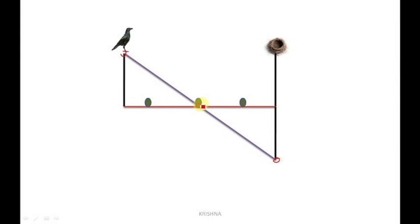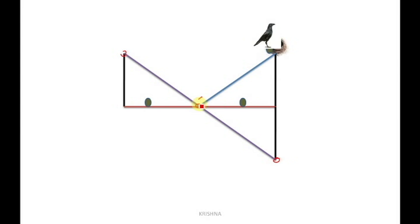That food grain should be chosen by the crow, as explained by Fermat. The crow takes that food grain and moves towards the nest. Why should the crow choose the grain where the straight line intersects? Very simply, because a straight line is always the shorter line — the shortest path. That is why the crow should choose that grain.